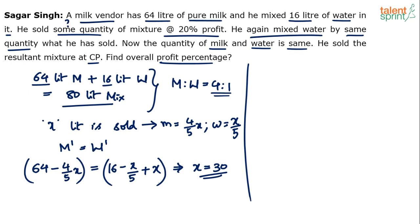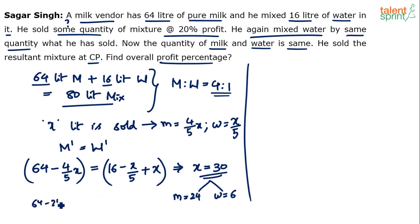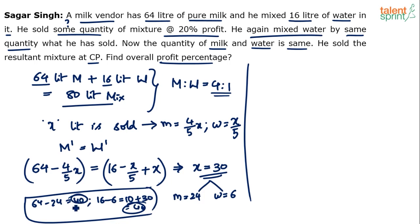Let's verify: if 30 liters was sold, milk in 30 liters = 4/5 of 30 = 24, water = 1/5 of 30 = 6. So remaining milk = 64 − 24 = 40, remaining water = 16 − 6 = 10. After adding 30 liters of water back: water = 10 + 30 = 40. So milk = 40 and water = 40 — they are equal. Milk and water become equal after adding 30 liters of water, which confirms our answer.